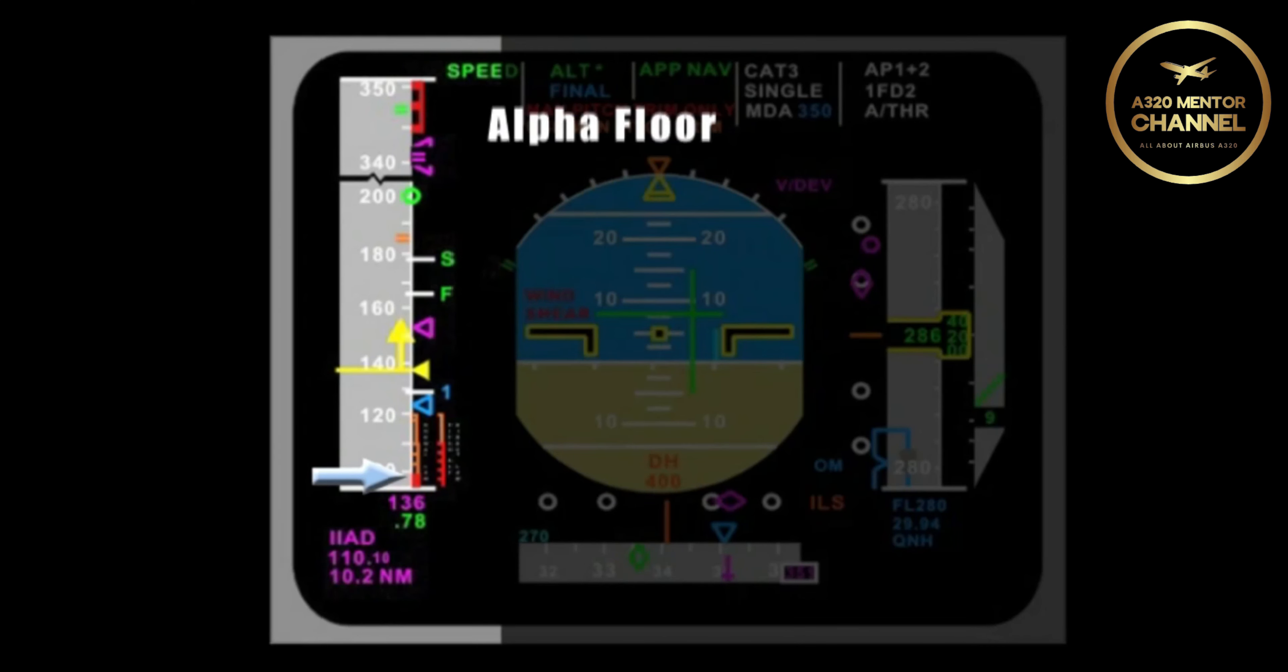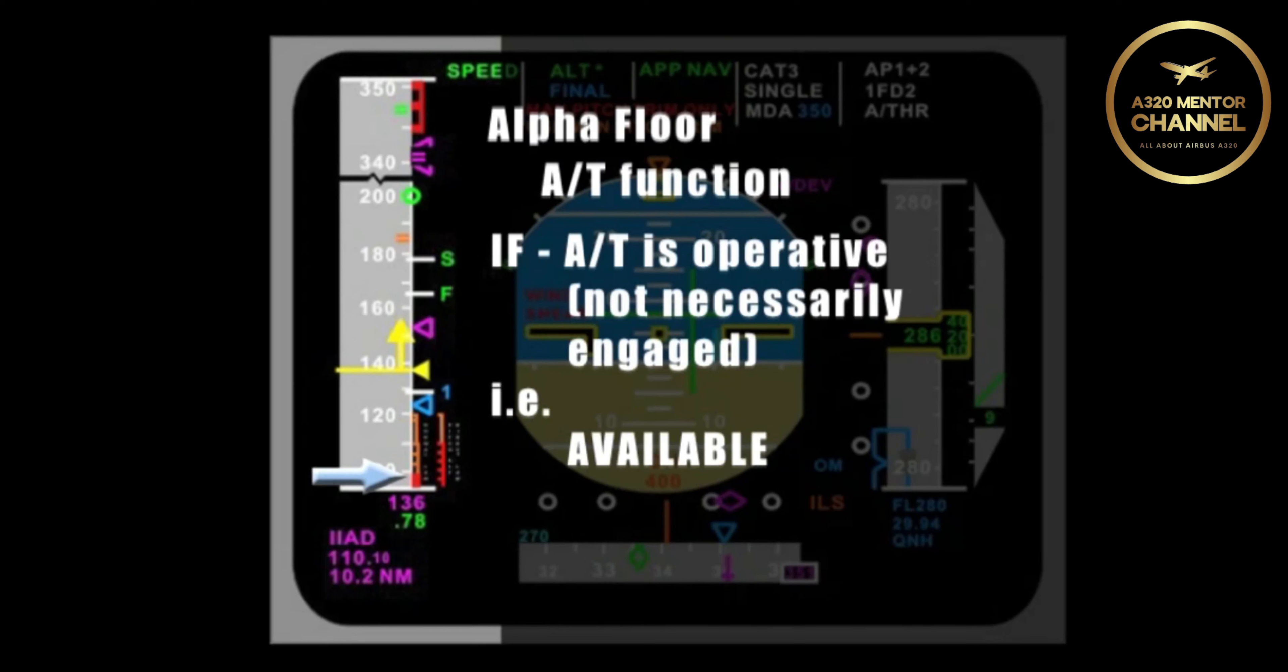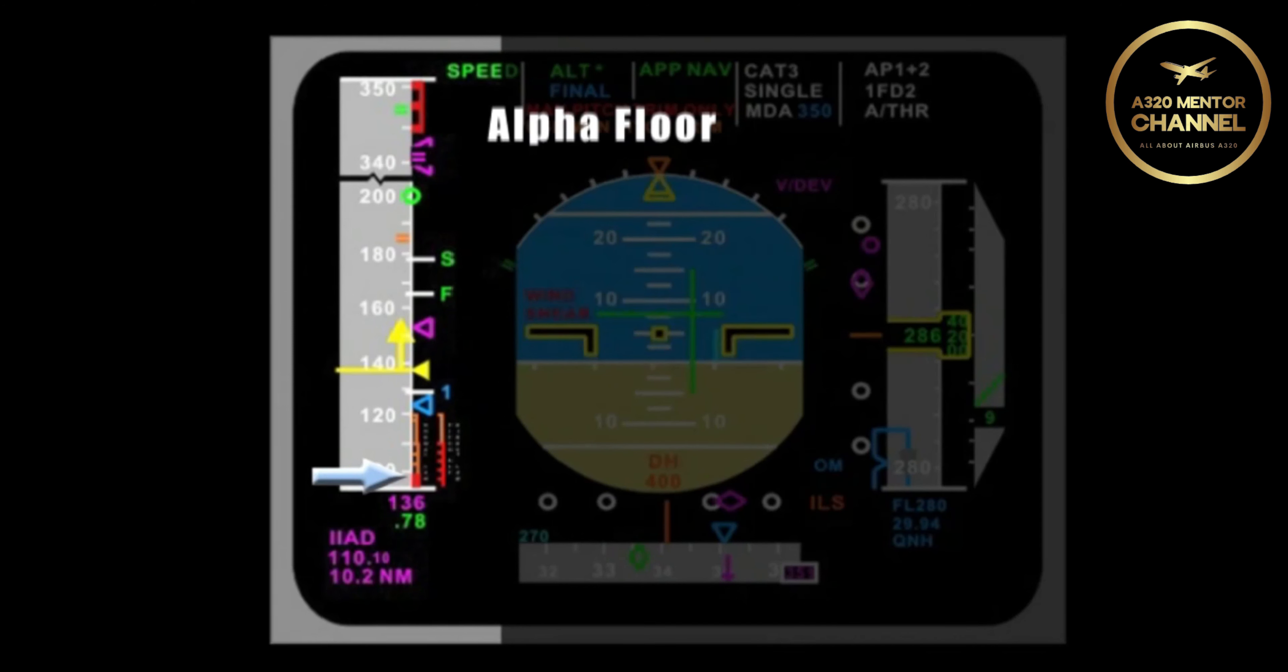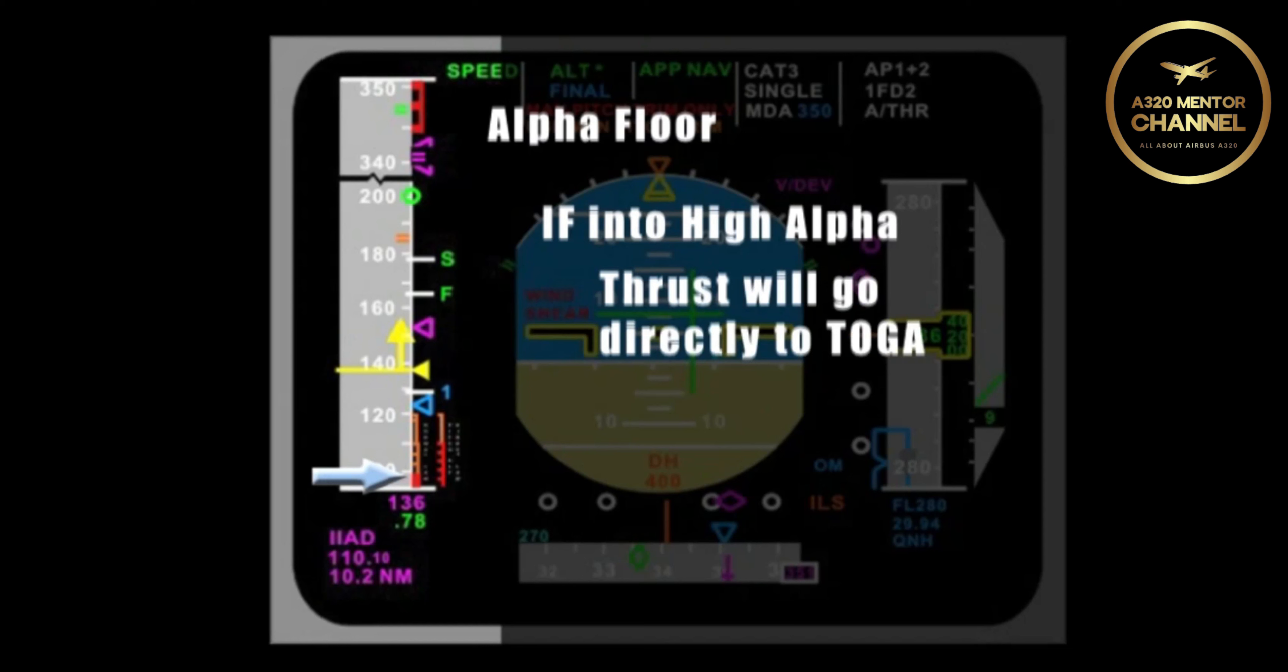You mentioned that the other protection was alpha floor. Describe that for me. Alpha floor is really an autothrottle function. If autothrust is operative, I don't necessarily have to have it engaged. It must be available. If I then get into a high alpha situation, thrust will go directly to toga without any action on my part. The aircraft sensed the impending stall and is telling you, I need thrust now.